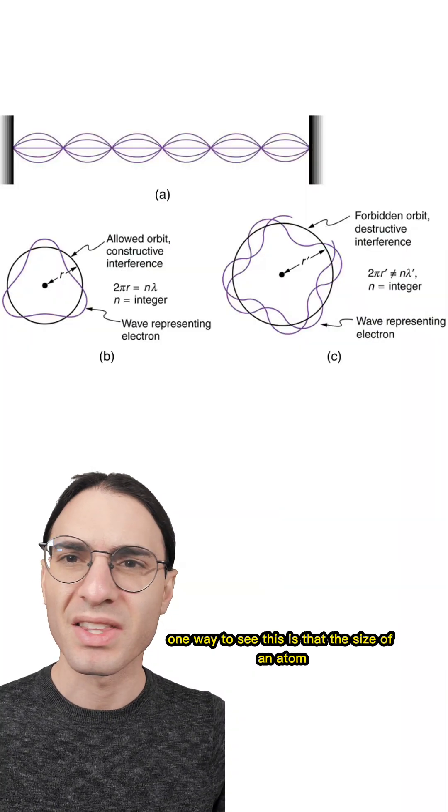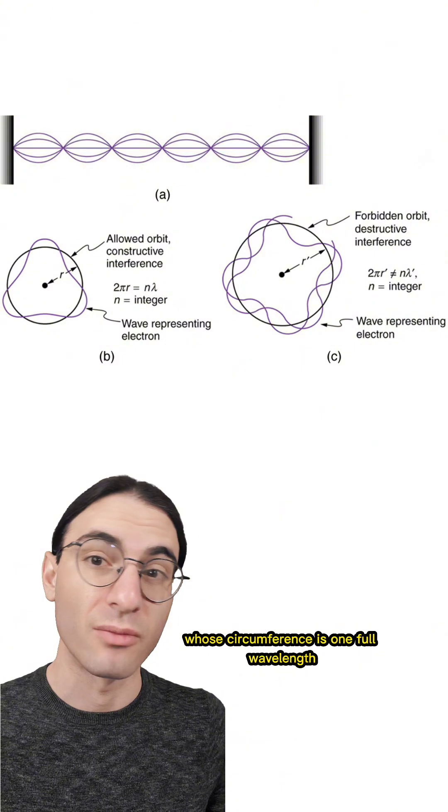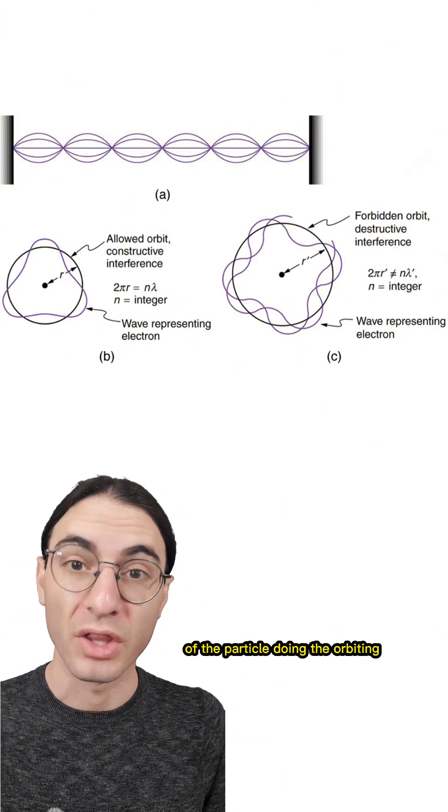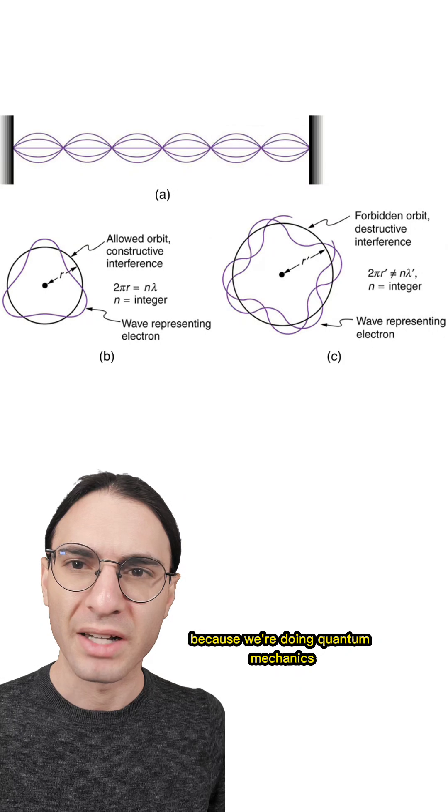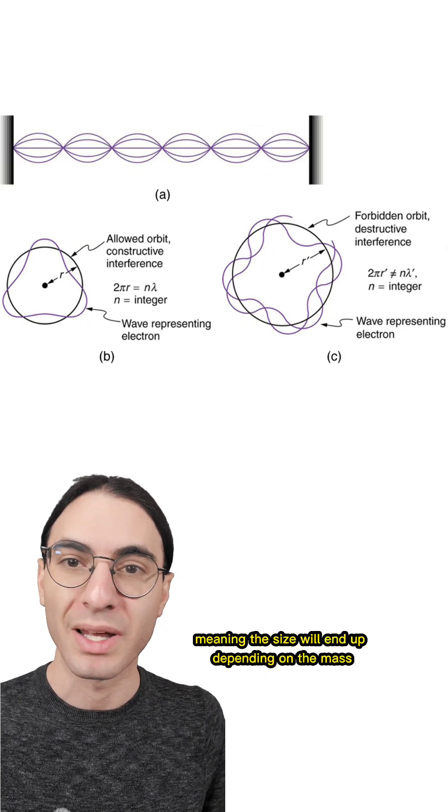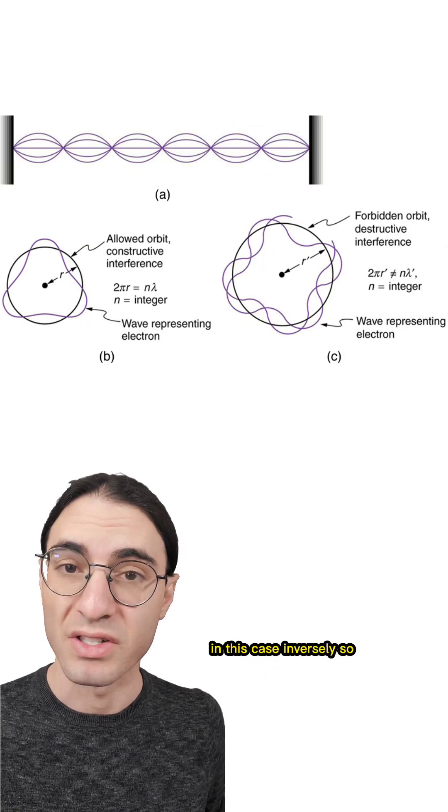One way to see this is that the size of an atom is approximately the size of a circle whose circumference is one full wavelength of the particle doing the orbiting at the required speed so it doesn't fall in. Because we're doing quantum mechanics, the wavelength is related to the momentum, meaning the size will end up depending on the mass, in this case, inversely so.